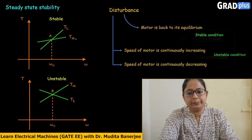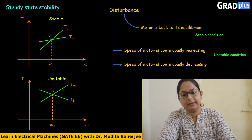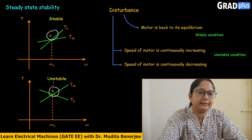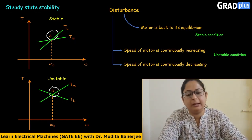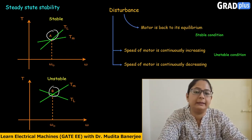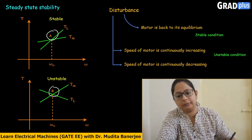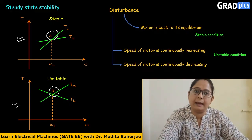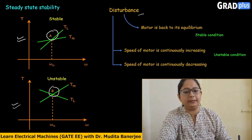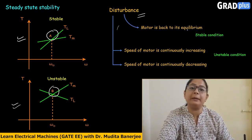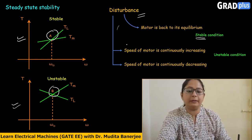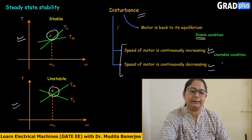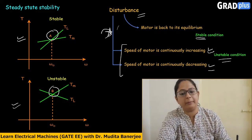Now let's understand this with speed-torque characteristics. We will consider two points — point A and point B — and decide which system is stable and which is unstable. This is a very important topic for competitive exams like the GATE exam. You will be given these types of curves and asked to decide stability. Remember: if the motor returns to equilibrium after disturbance, the system is stable; if speed keeps increasing or decreasing, it is unstable.